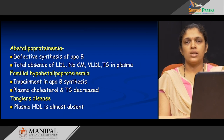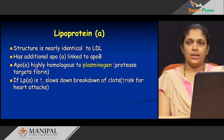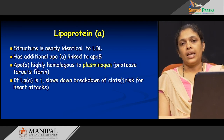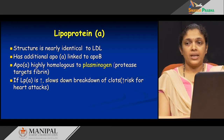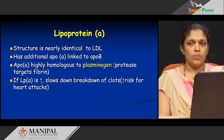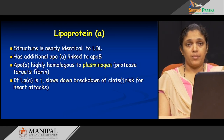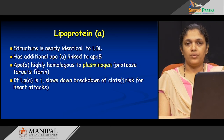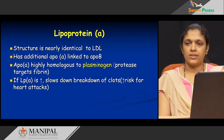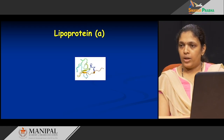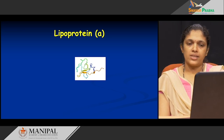Moving on to the next marker of the extended lipid profile: lipoprotein(a). Lipoprotein(a) is structurally similar to LDL, but in addition to ApoB it has ApoA, linked by disulfide bridges. ApoA, which is part of lipoprotein(a), is homologous to plasminogen — a protease that targets fibrin. So if there are high levels of lipoprotein(a), it will slow down the breakdown of clots. If clots are not broken down, they accumulate in the arteries, which is a risk factor for coronary artery disease or heart attacks.